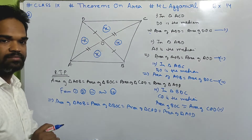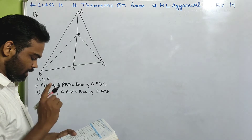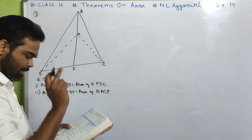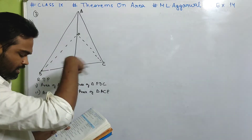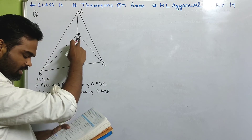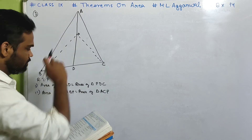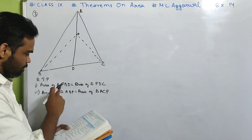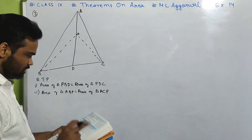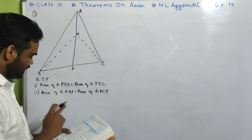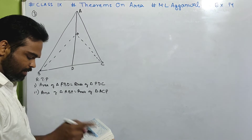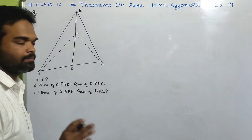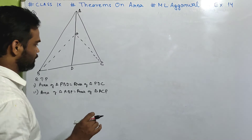Number 3. In the figure given, AD is the median of triangle ABC and P is any point on AD. Prove that area of triangle PBD equals area of triangle PDC, and area of triangle ABP equals area of triangle ACP.